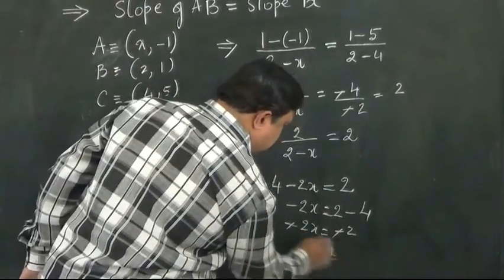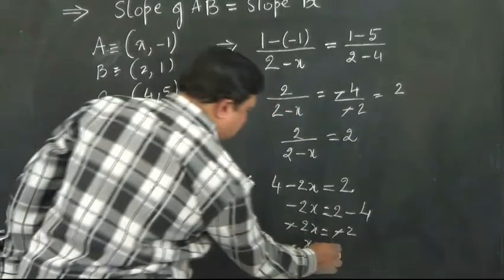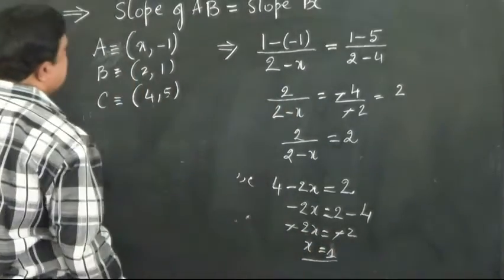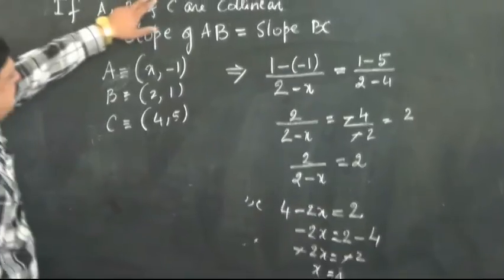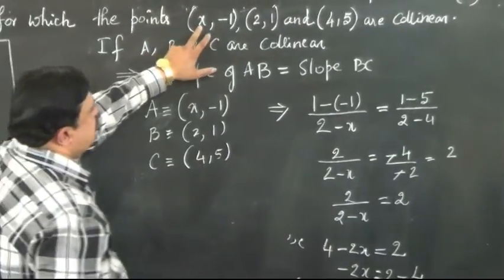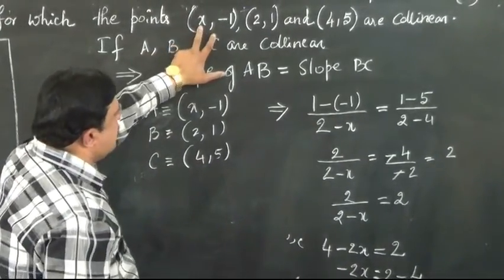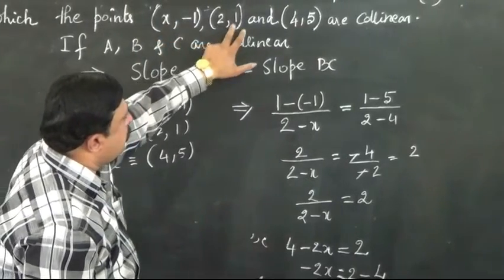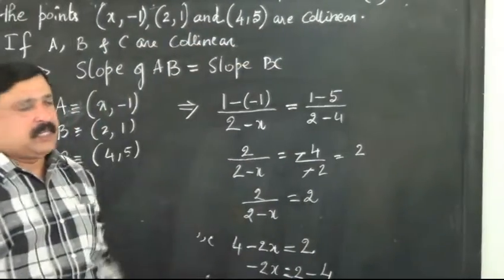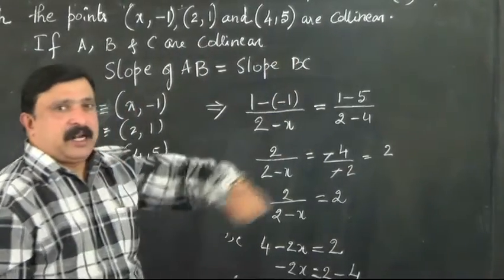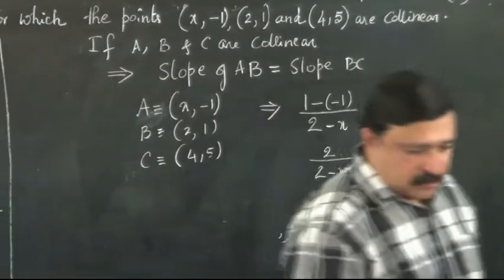Because here we have 2x, so the point x is 1. So here x can be replaced by 1. If x is 1 here, then (1, -1), (2, 1), and (4, 5) are all collinear - that means they all lie on the same straight line. Hence x is equal to 1.